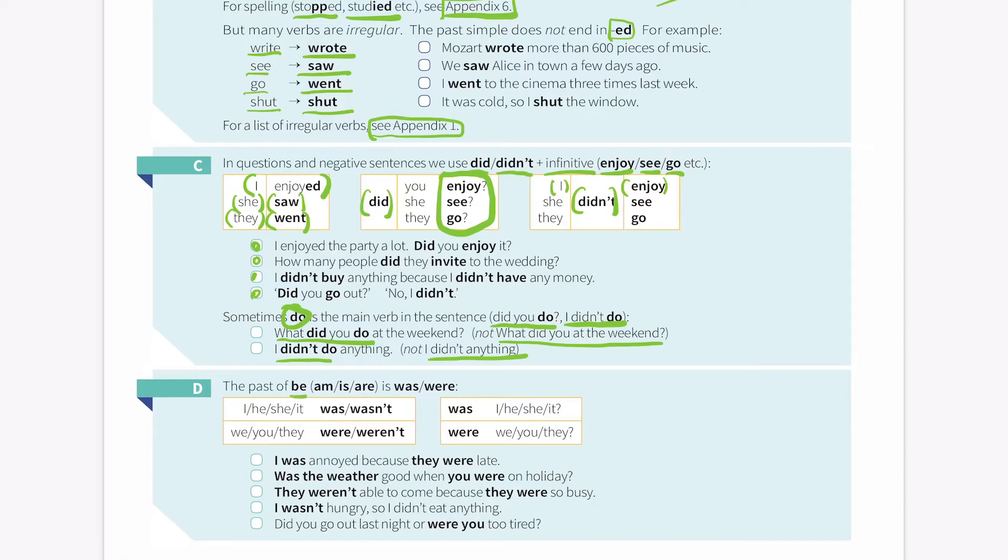The past of be, am, is, are, is was and were. I, he, she, it, was or wasn't. I was happy. He wasn't happy. She was sad. It wasn't angry. Was I, he, she and it? Was it sad? Was I angry? Was she sad?